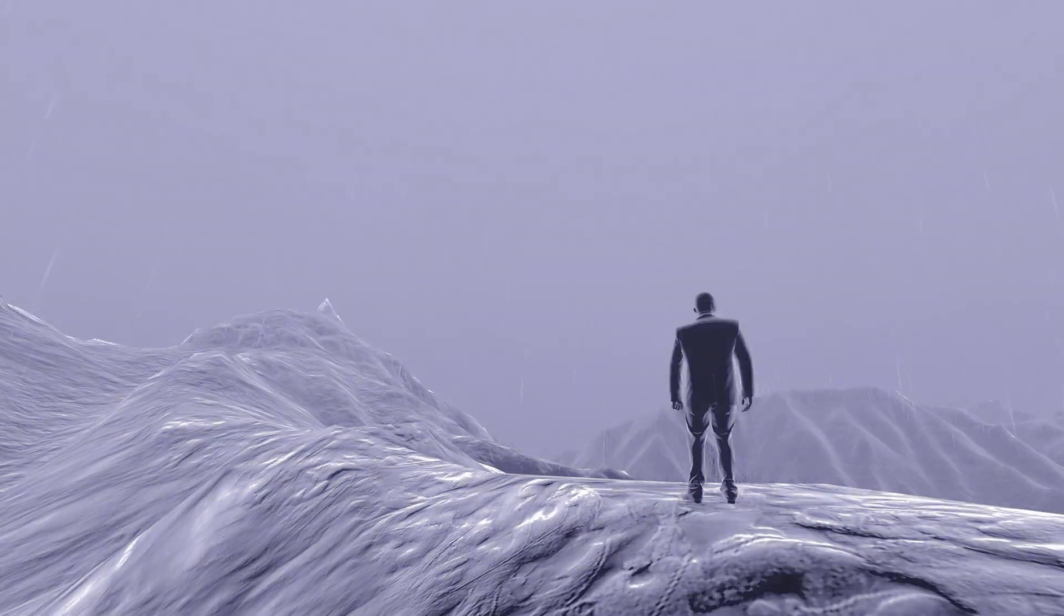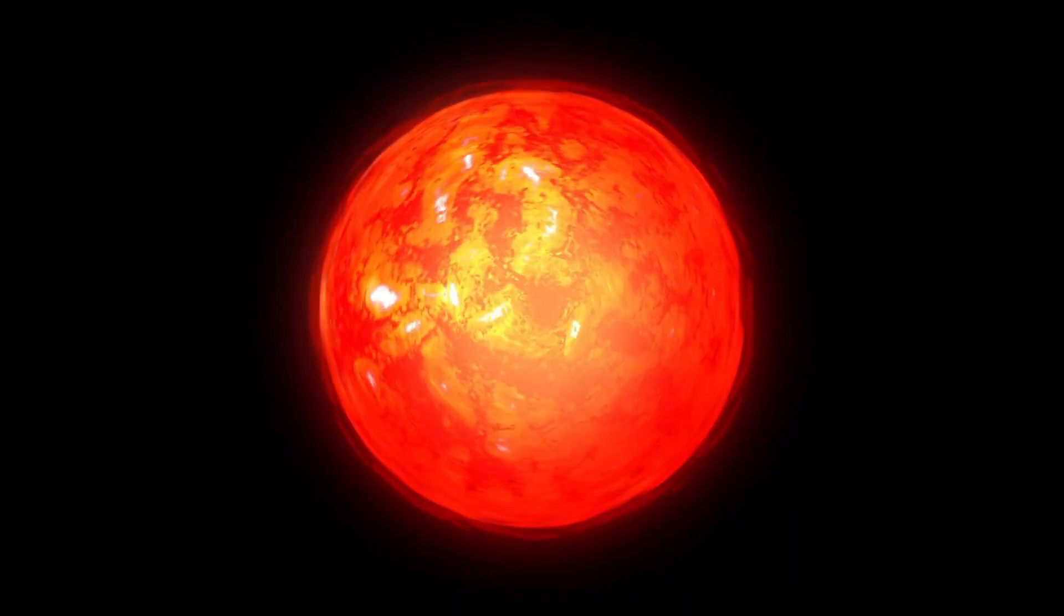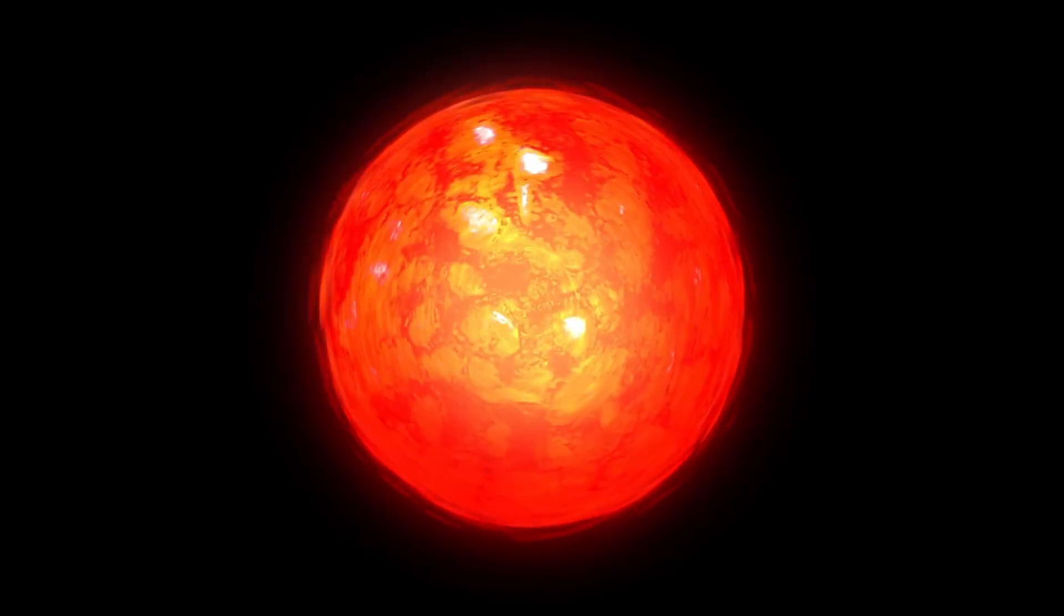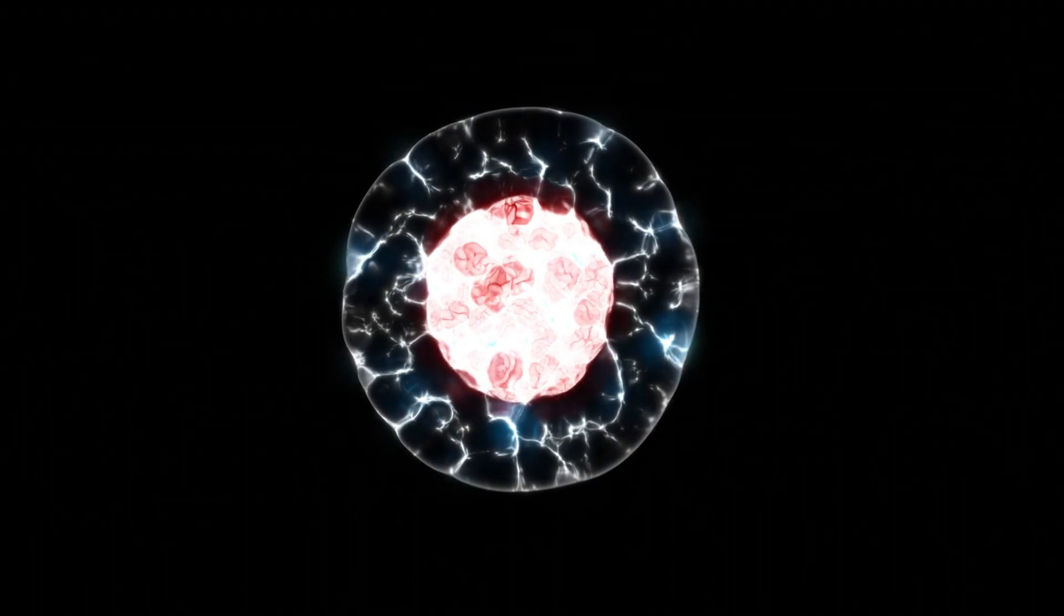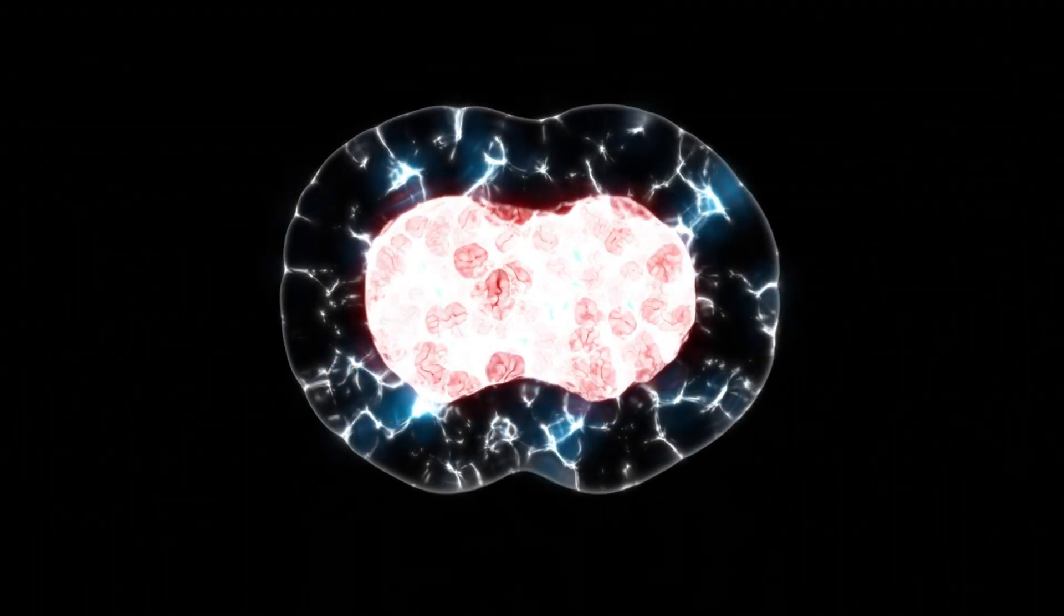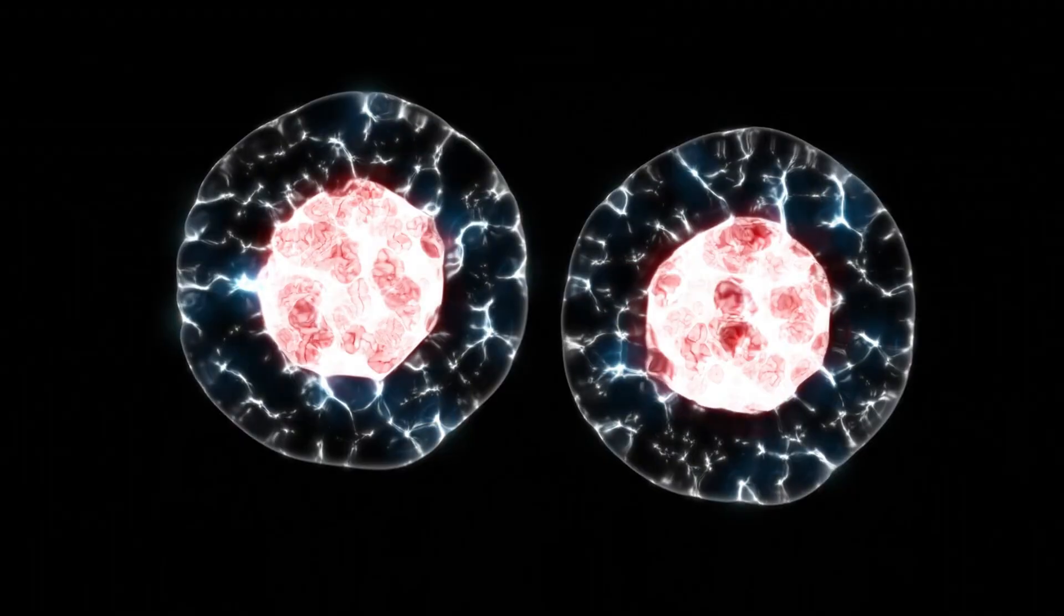Betelgeuse isn't just big, it's a cosmic rebel, living fast and dying young. Unlike our sun, a steady burner that'll shine for billions of years, red supergiants like Betelgeuse are reckless. They burn through their fuel at a ferocious pace, fusing hydrogen into helium, then helium into carbon, oxygen, and heavier elements in a nuclear frenzy. This star is in its final act.